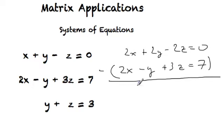So subtract the second equation from the first equation. 2x minus 2x is zero. 2y minus negative y is 3y. Negative 2z minus 3z is minus 5z. And then zero minus seven is negative seven.